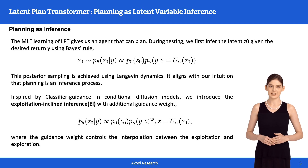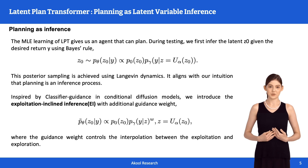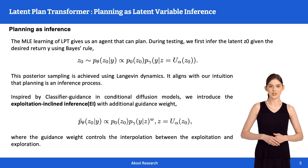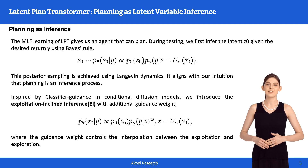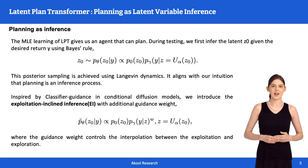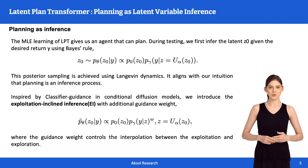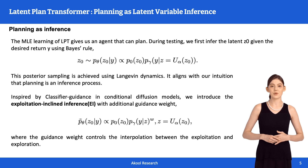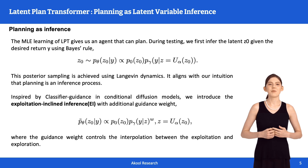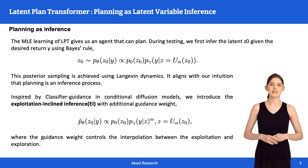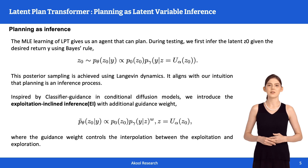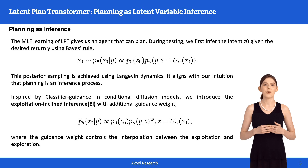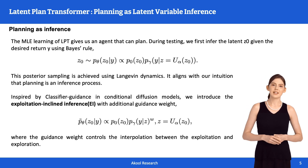The latent variable we infer replaces the return-to-goes in our policy, giving us richer information about what to expect in the future. The maximum likelihood learning of LPT gives us an agent that can plan. During testing, we first infer the latent plan Z given the desired return Y using Bayes' rule. This posterior sampling is achieved using Langevin dynamics and is obtained before the policy execution, aligning with our intuition that planning is an inference process. Additionally, inspired by classifier guidance in conditional diffusion models, we introduced a method called exploitation-inclined inference (EI), which uses an extra guidance weight to balance between exploiting known-good strategies and exploring new ones. This mode-seeking sampling technique ensures that plans remain consistent over long periods and is particularly useful for stitching together parts of sub-optimal trajectories to create a more optimal overall path.